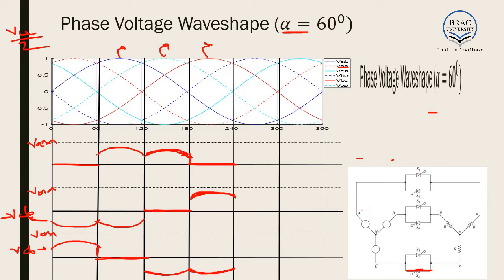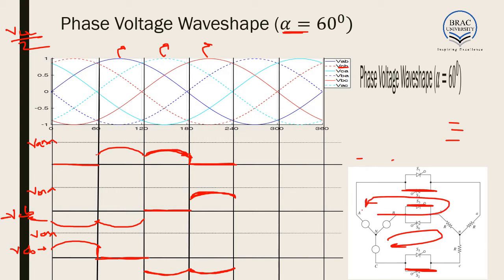For the next 60 degrees, switches 2, 3, and 4 are closed. The output voltage will either be VBC or VBA. In this range, VBA is the maximum. Since VBA is the maximum, current starts from B and ends at A. Therefore, VBN equals plus VBA over 2 across the B phase and VAN equals minus VBA over 2 across the A phase. For the C phase, the voltage will be 0 because no current flows to the C phase.